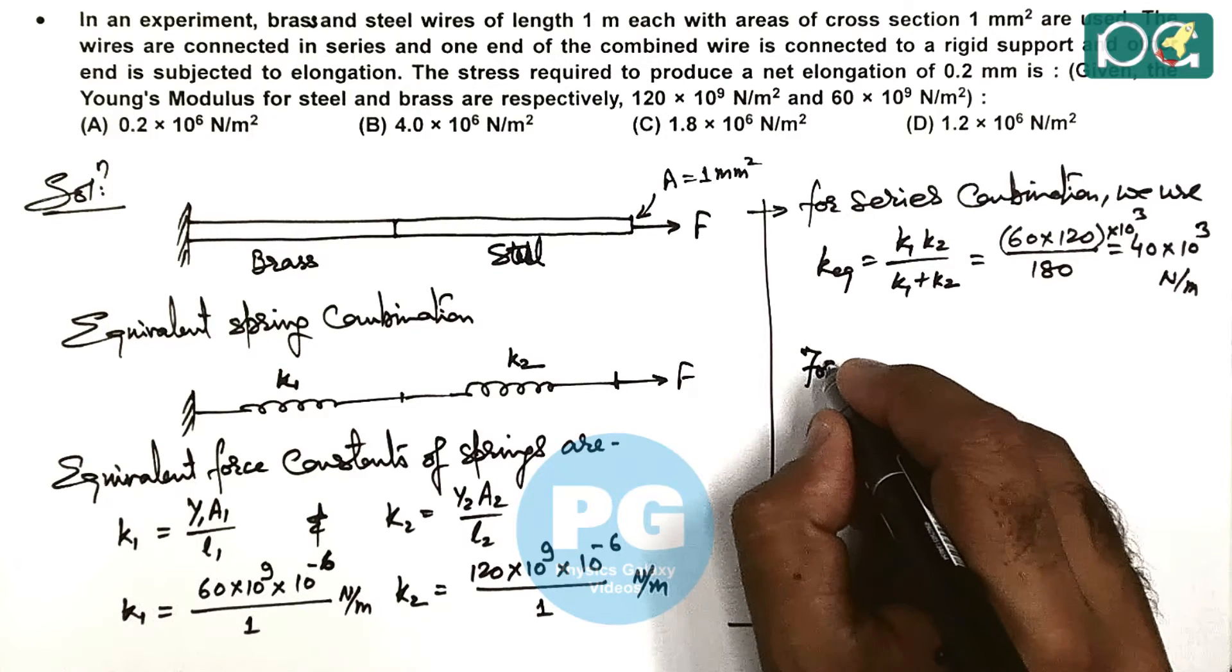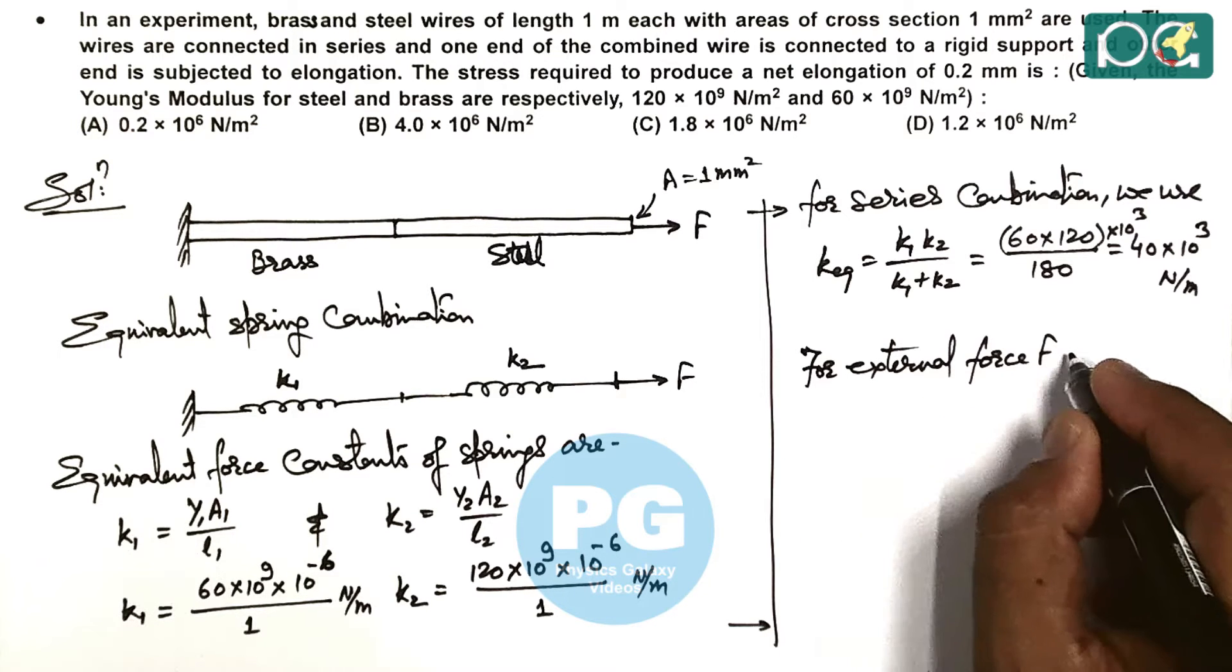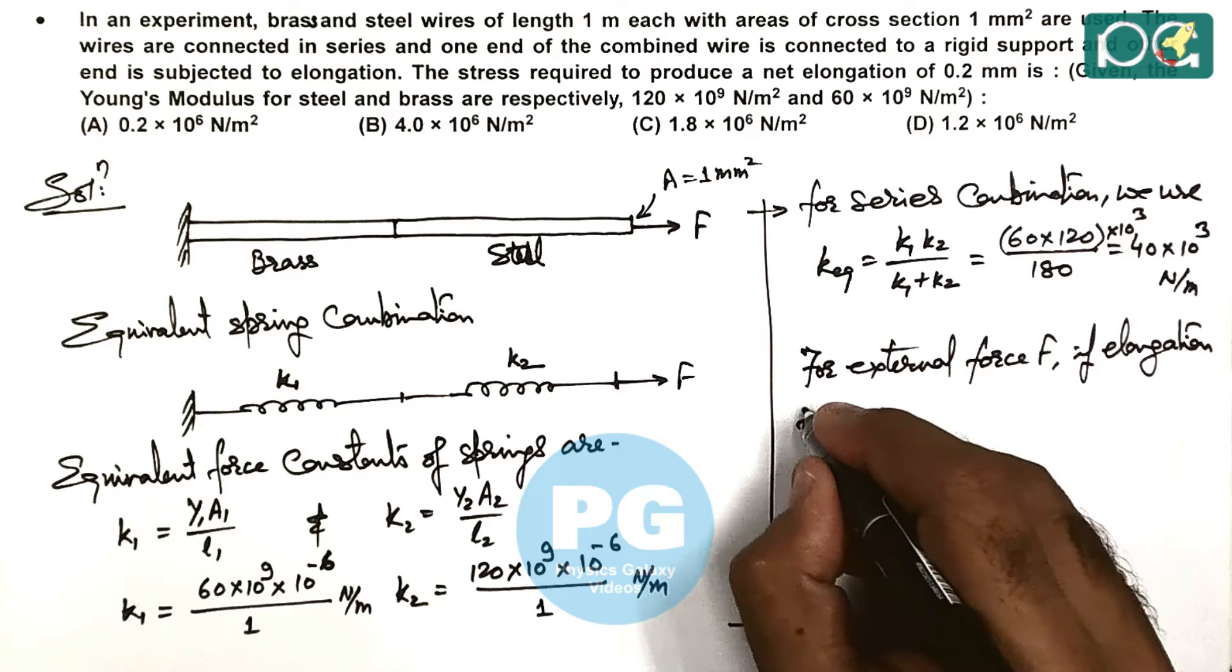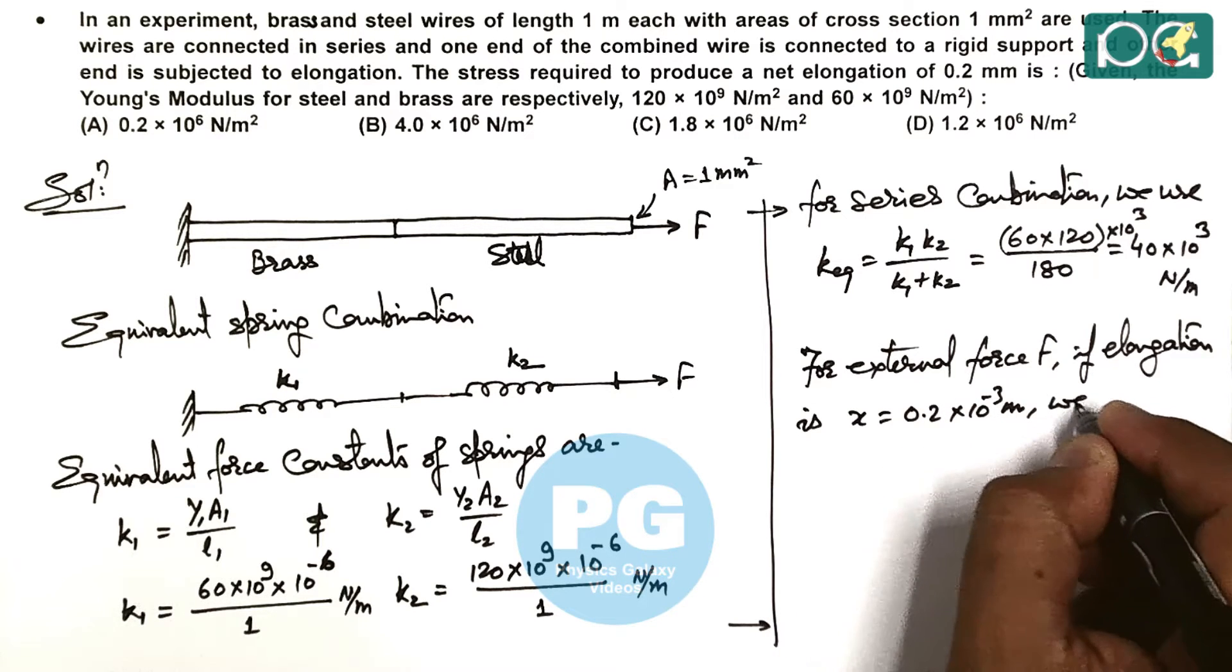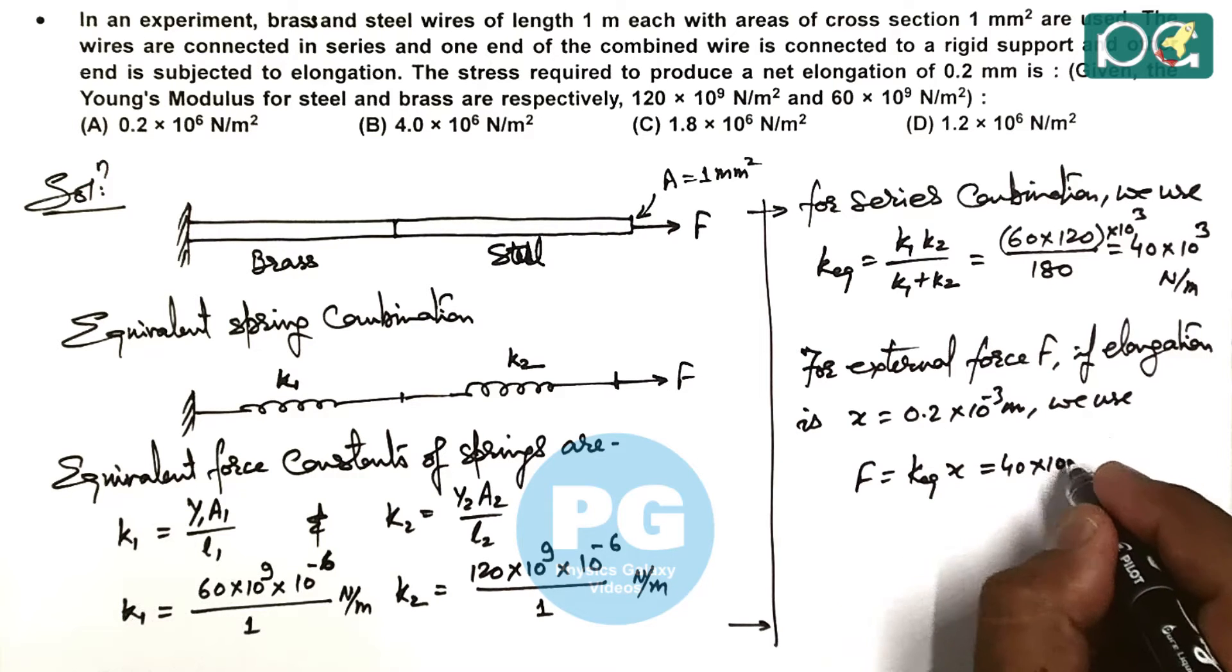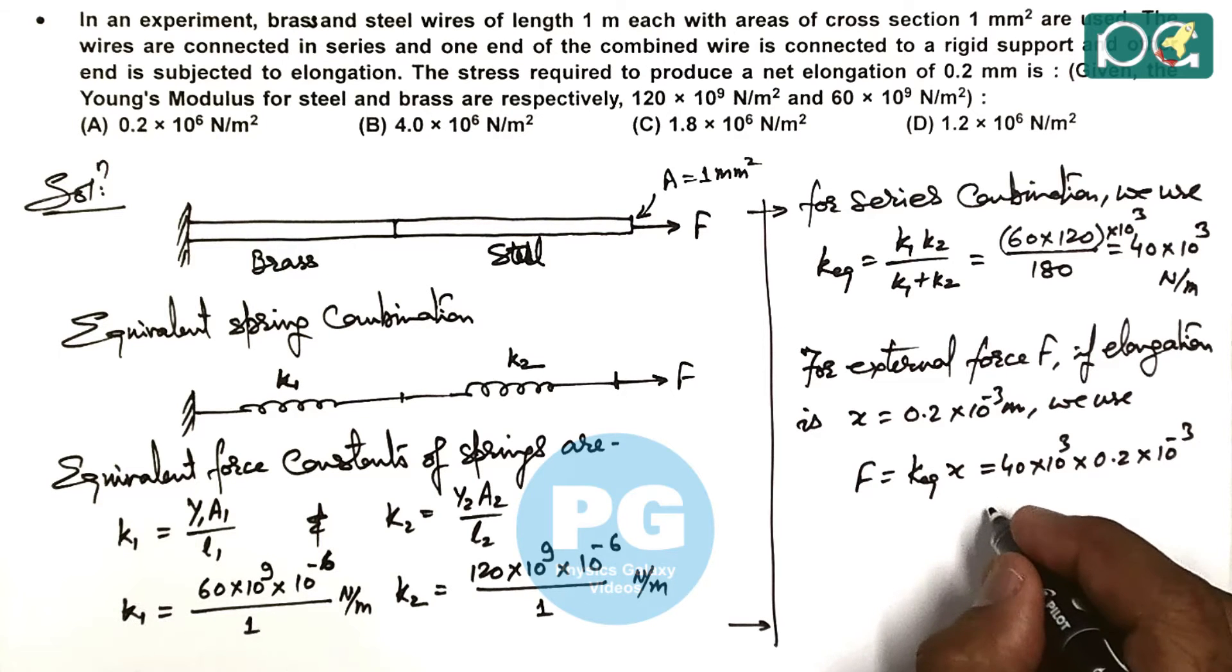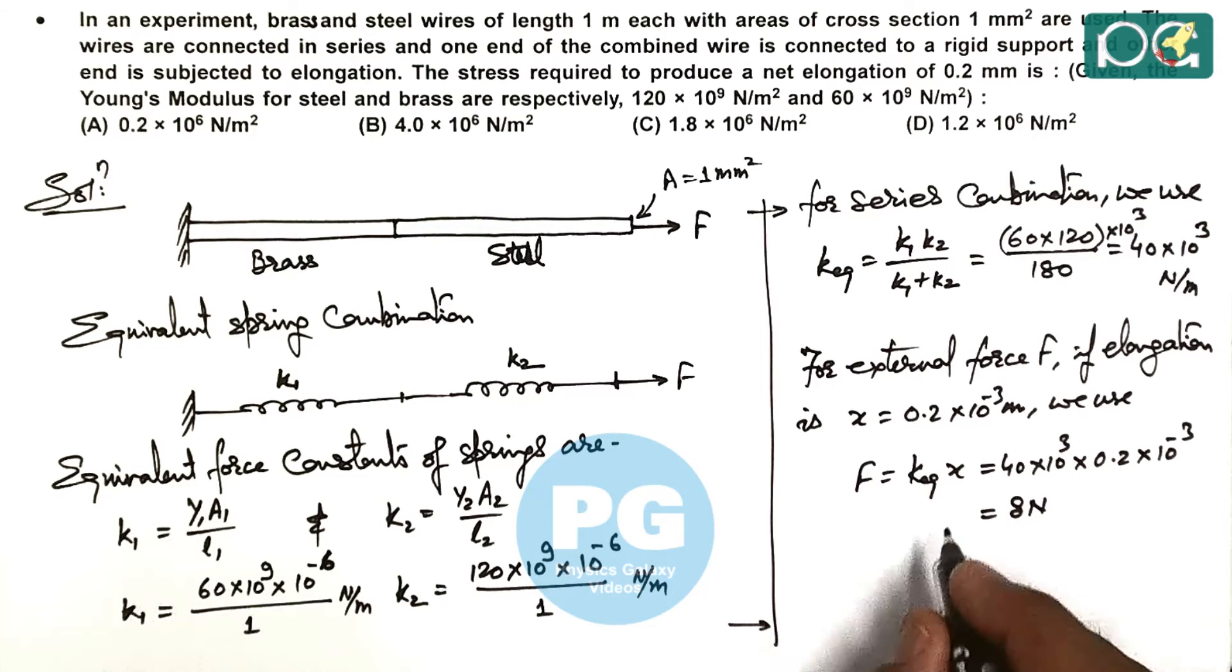If we calculate the stress, then we can write for external force F, if elongation is x, which is 0.2×10^-3 meter, we can use F = K_equivalent × x. So this is 40×10^3 multiplied by 0.2×10^-3, and that equals to 8 Newton.